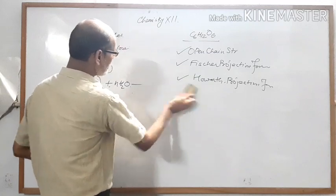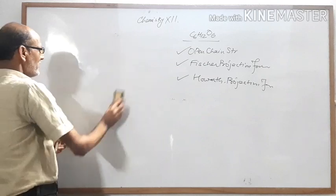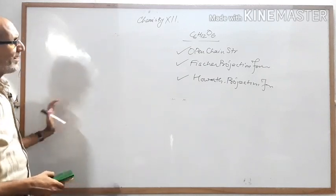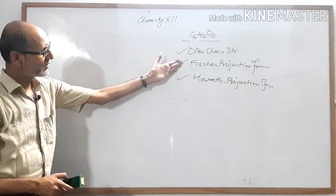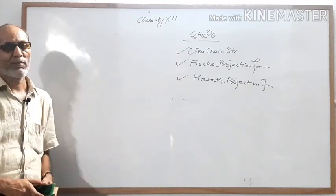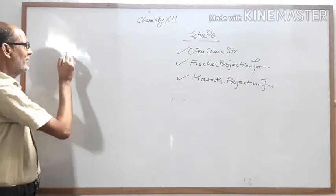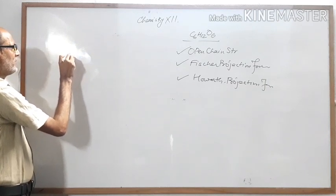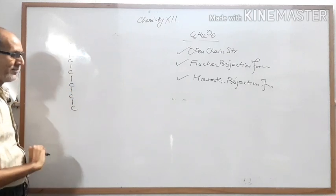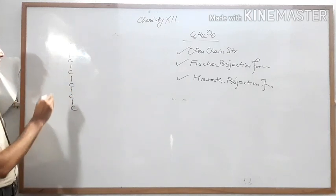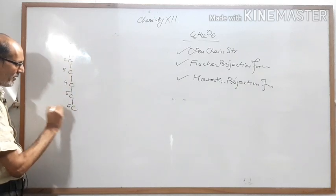First we will draw the open chain structure of glucose. See properly, because when you draw the first open chain structure, you can then draw the second and third from it. In glucose there are six carbons: one, two, three, four, five, and six. Write the carbon numbers here.